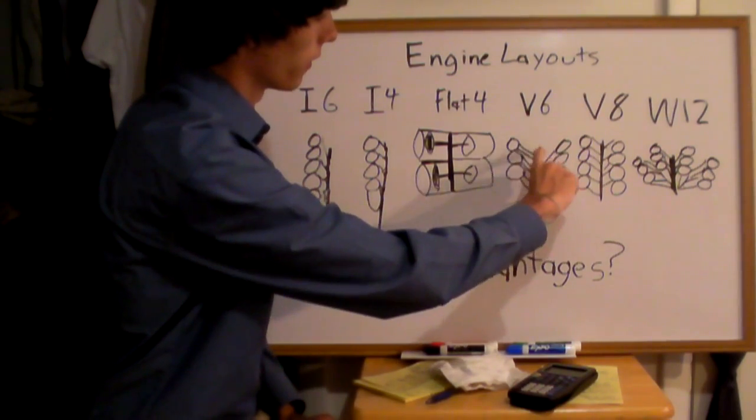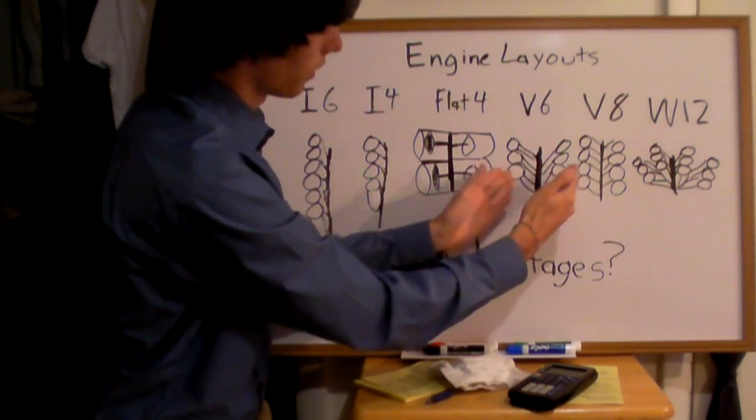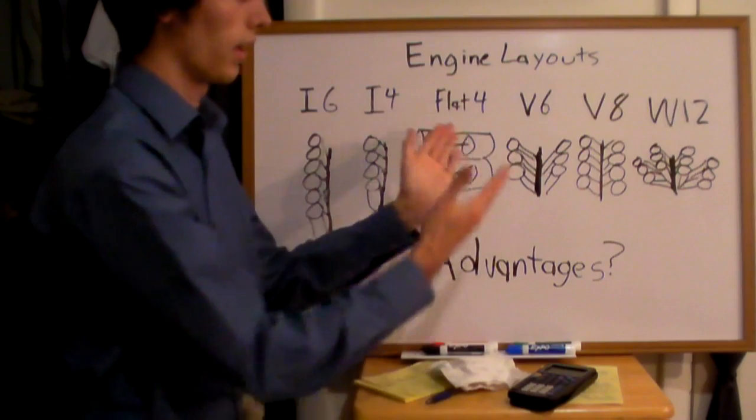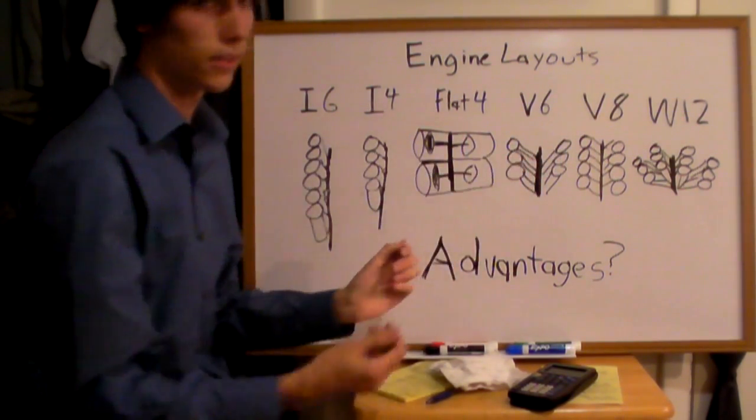Now these pistons connected to push rods will rotate the crankshaft, and this is the manner in which they are laid out. So a V6 has a V design with six cylinders, a V8 has a V design with eight cylinders.